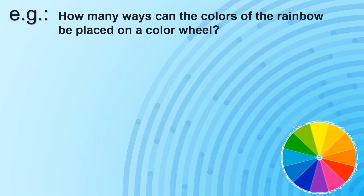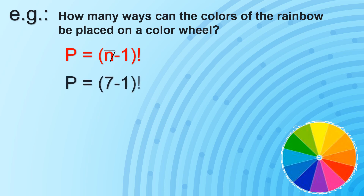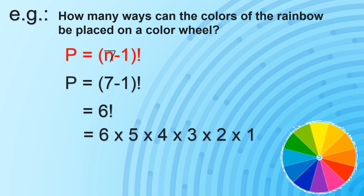Let's have another example. How many ways can the colors of the rainbow be placed on a color wheel? A color wheel is in circular form, and we all know that there are 7 unique colors in a rainbow — ROYGBIV. So we use P equals (n minus 1) factorial. Since there are 7 colors, we have (7 minus 1) factorial, which simplifies to 6 factorial. 6 factorial equals 6 times 5 times 4 times 3 times 2 times 1, giving us 720 ways to arrange all the colors on a color wheel.